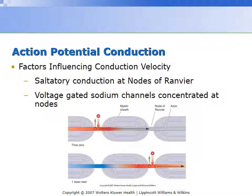So here, to show this visually: we have nodes of Ranvier which are rich in sodium channels. When sodium channels open up, sodium rushes into the axon, causes depolarization, and to an extent this depolarization causes a jump from a node to a node. And that in turn activates the subsequent voltage-gated sodium channels and propagates the action potential along the neuron.